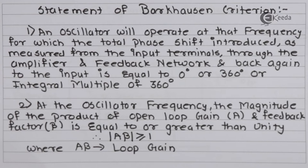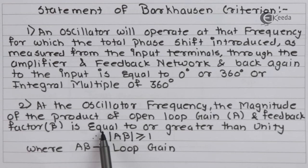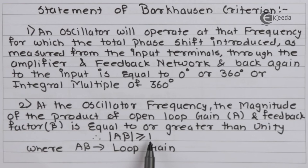The second condition is: at the oscillator frequency, the magnitude of the product of the open-loop gain A and feedback factor β must be equal to or greater than unity. That means the magnitude of Aβ — called the loop gain — is required to be greater than or equal to 1. So these are the two conditions: total phase shift around the loop must be 0, 360, or an integral multiple of 360 degrees; and the magnitude of Aβ must always be greater than or equal to unity.